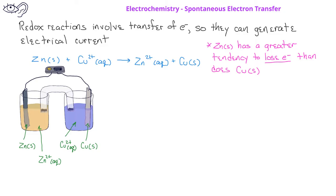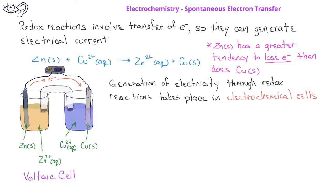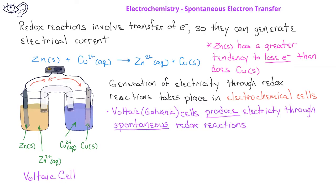However, we could separate the zinc atoms and the copper ions and force the electrons to be transferred through some other means. In this case, the electrons could be transferred through a wire that connects two different solutions. In one solution, we have copper metal in a solution of copper ions, and in the other cell, we have zinc metal in a solution of zinc ions. The flowing electrons would constitute an electrical current and could therefore be used to do electrical work. When we have a setup such as this, we can call it a voltaic cell. The generation of electricity through redox reactions is called an electrochemical cell.